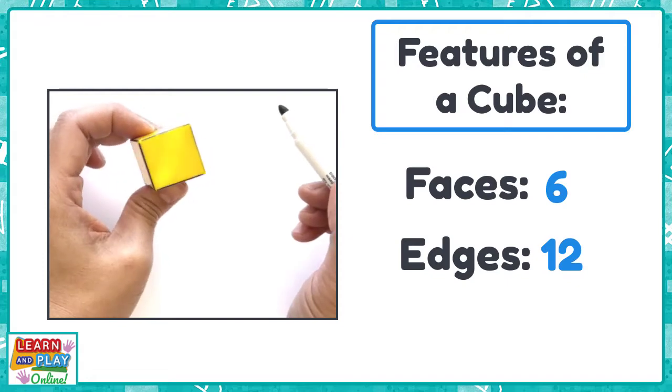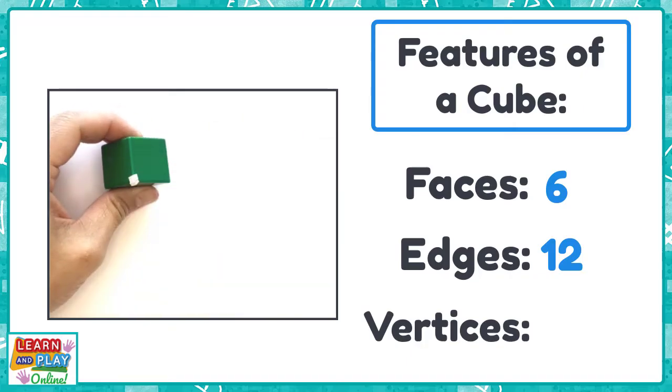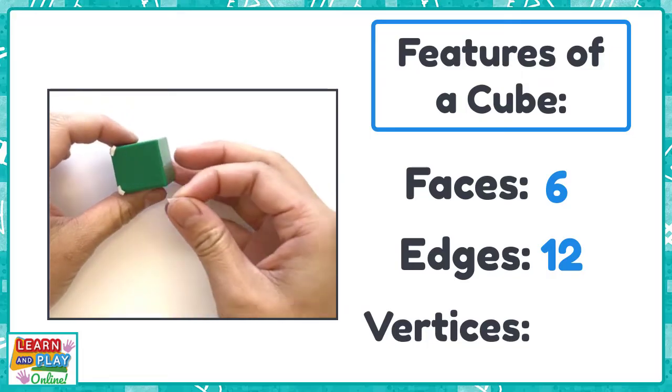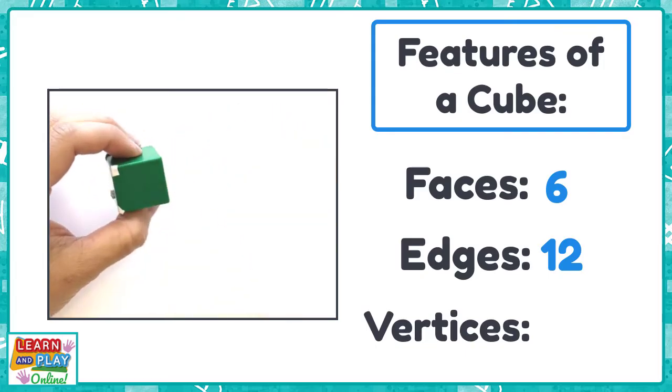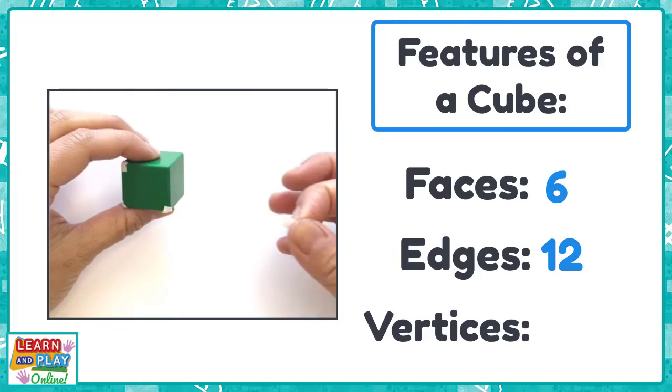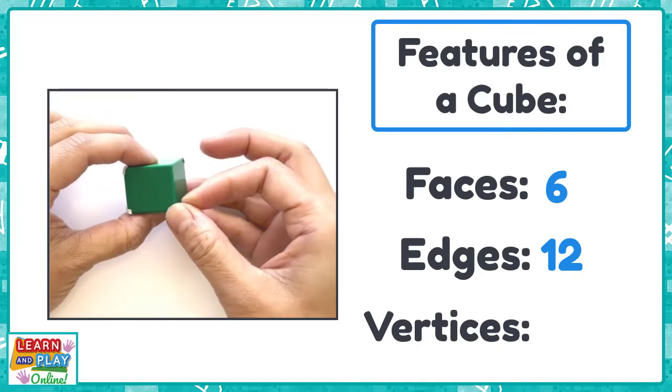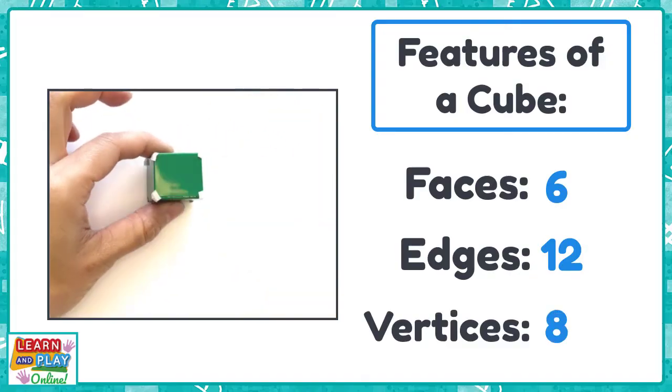Let's count the next feature of a cube, the vertices. Vertices are the points where the edges meet. One, two, three, four, five, six, seven, and eight. A cube has eight vertices.